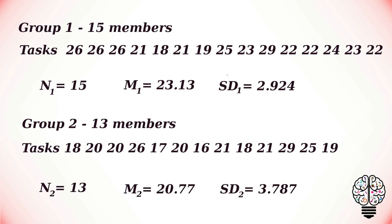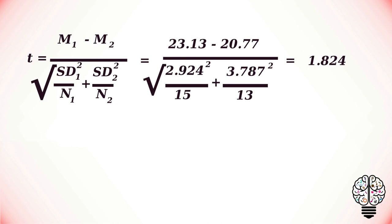For group 1 (n=15), the mean number of completed tasks is 23.13 and the standard deviation is 2.924. For group 2 (n=13), the mean is 20.77 and the standard deviation is 3.787. To calculate the t-value we use the formula: t = (mean₁ − mean₂) / √((SD₁² / n₁) + (SD₂² / n₂)). Substituting the values, we get t = 1.824.